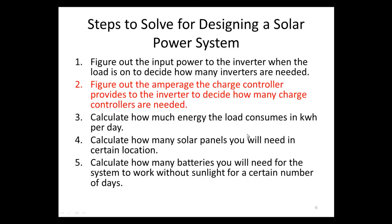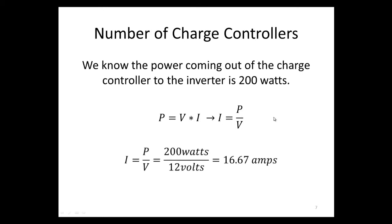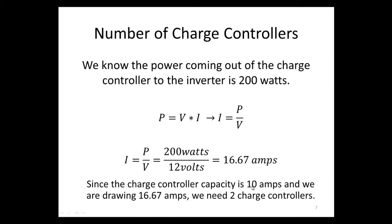Step two: figure out the amperage the charge controller provides to the inverter to decide how many charge controllers are needed. The power coming out of the charge controller to the inverter is 200 watts. Since the charge controller is rated with a current rating, we use power equals voltage times amperage, rearranged as amperage equals power over voltage: 200 watts divided by 12 volts gives 16.67 amps. Since our rating is 10 amps and we're drawing 16.67 amps, we need two charge controllers, giving a combined rating of 20 amps.